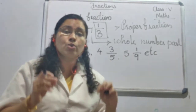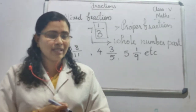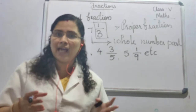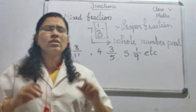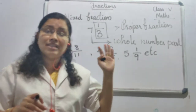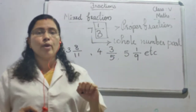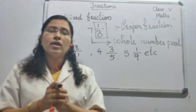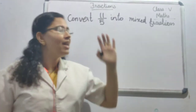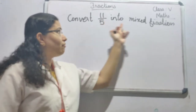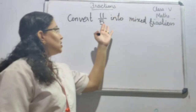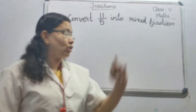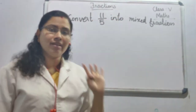I hope all of you understood how to write a mixed fraction and can give an example for a mixed fraction. Now we can convert a mixed fraction into an improper fraction, and also an improper fraction can be converted into a mixed fraction. Let us see how to convert 11/5 into a mixed fraction. As you all know, 11/5 is an improper fraction because the numerator is greater than the denominator.